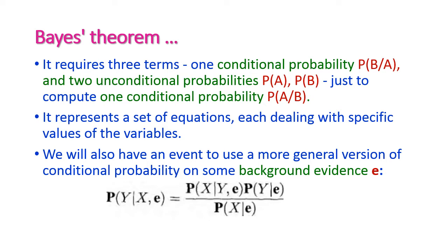It represents a set of equations each dealing with a specific value of the variables, where A and B are random variables. We can also use a more general version of conditional probability on some background evidence E. In the last video we saw the probability of P(sunny | cloud, cold), where 'cold' is background evidence.